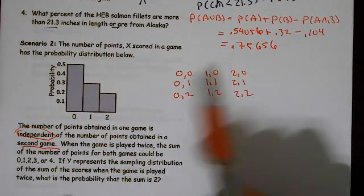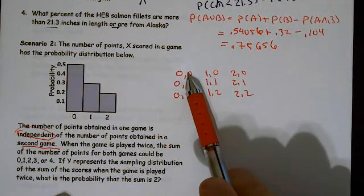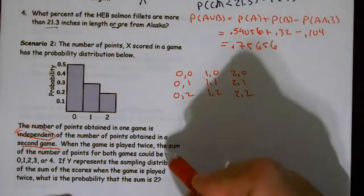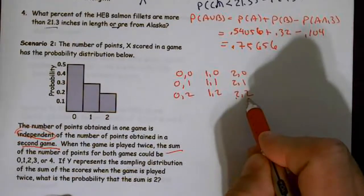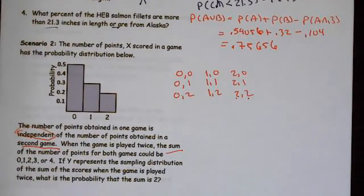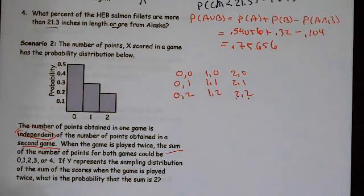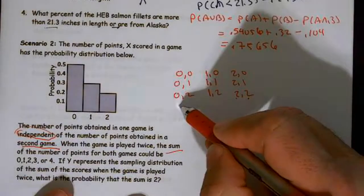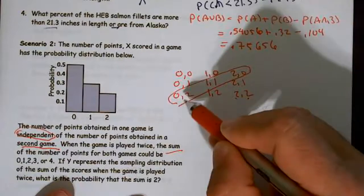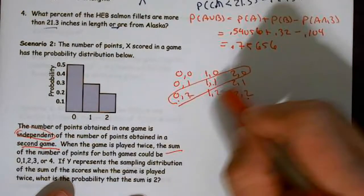The fewest points I could end up with is 0 + 0 = 0, and I know I need to add them because they said sum. 2 + 2 = 4 is the max. If Y represents the sampling distribution, what is the probability that the sum is 2? That means I only care about (0,2), (1,1), and (2,0).